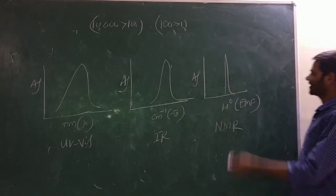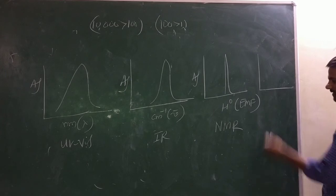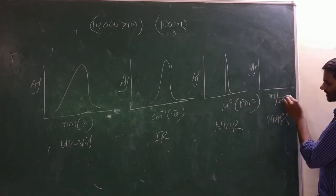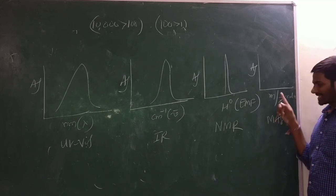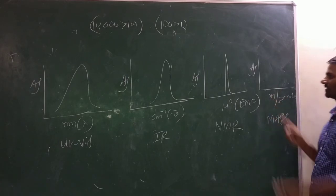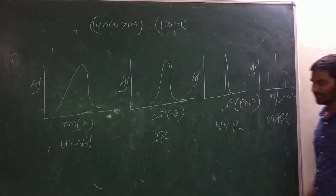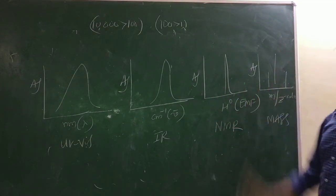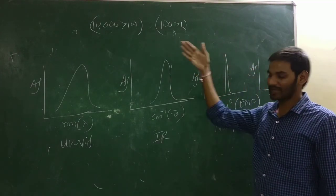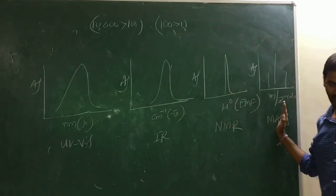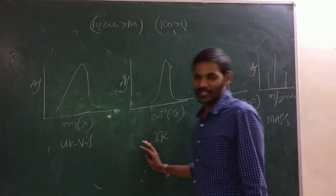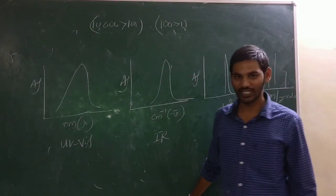For mass spectra, the x-axis is m/z (mass-to-charge ratio), based on the molecular weight of the sample, and it consists of absorption lines. This is the conclusion — you can clearly differentiate one spectra from another. Whenever you see an unknown spectra, based on the appearance of bands or peaks, you can analyze whether the spectra is UV-visible, IR, NMR, or mass. This concept helps you identify unknown compounds.